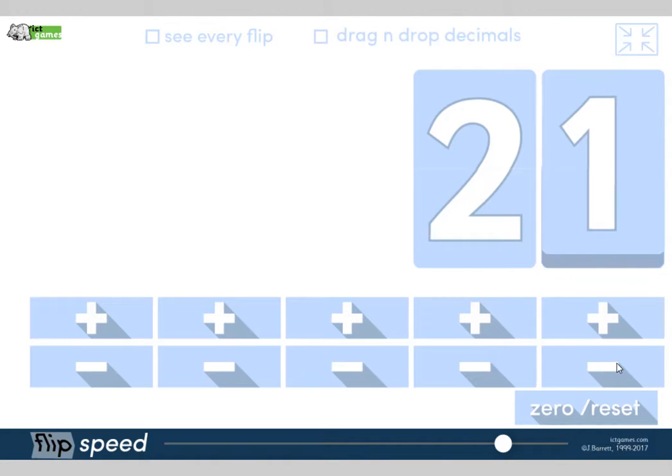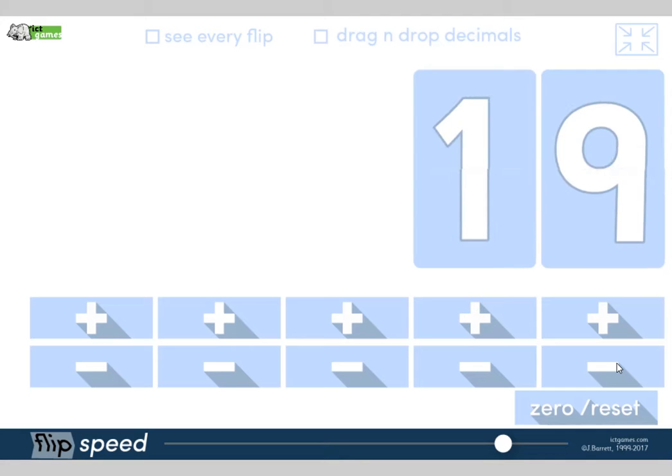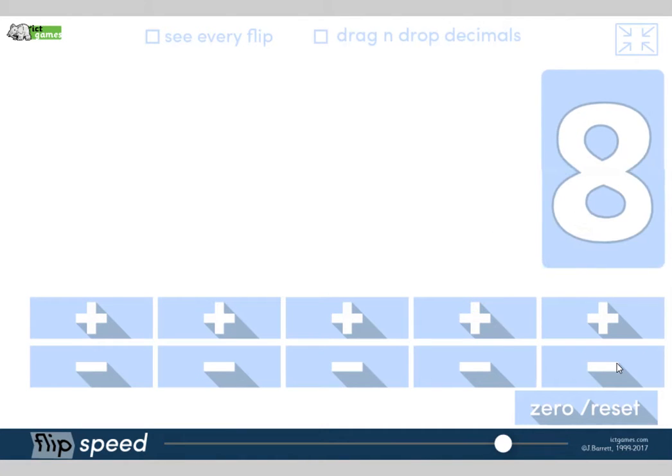What's one less than 21? 20, 19, 18, 17, 16, 15, 14, 13, 12, 11, 10, 9, 8, 7, 6, 5, 4, 3, 2, 1, 0. Well done, guys.